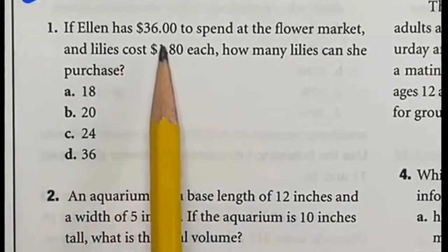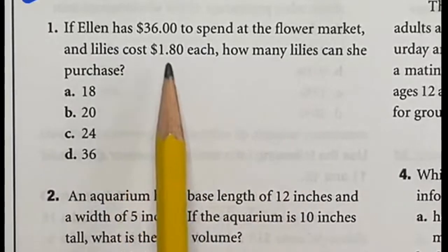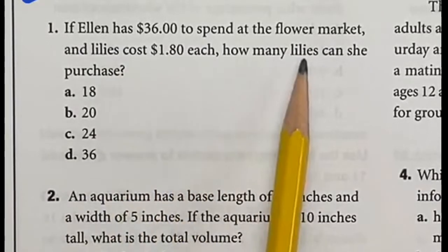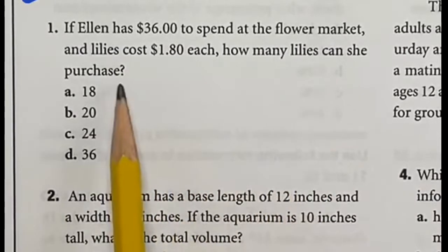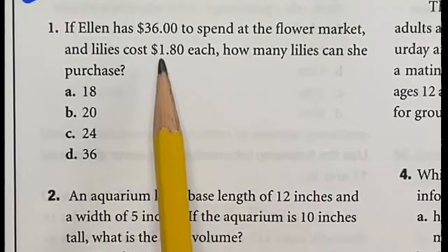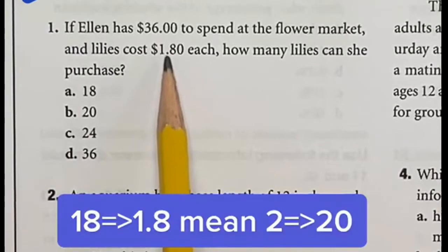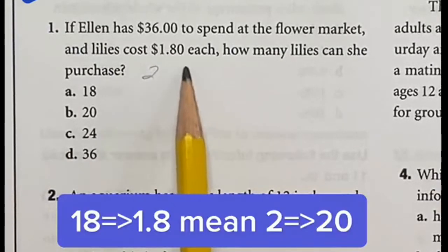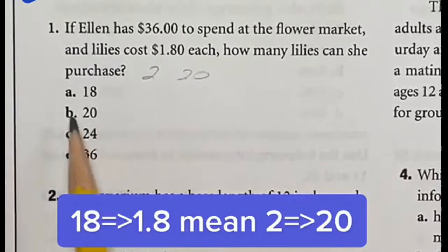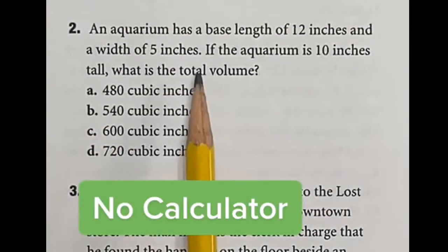Ellen has $36 to spend in the flower market, and lilies cost $1.80 each. How many lilies can she purchase? 36 divided by 18 is 2. Since I'm just moving the decimal over one place, that means instead of 2, we're looking at 20. Remember, on the ASVAB, you get no calculator.